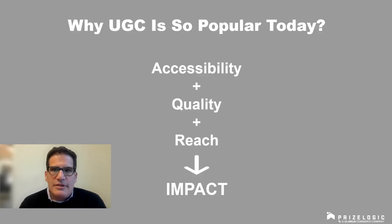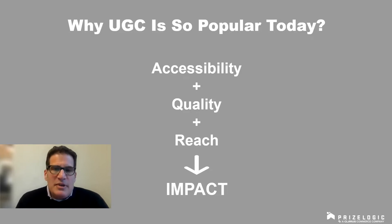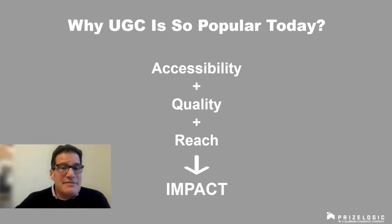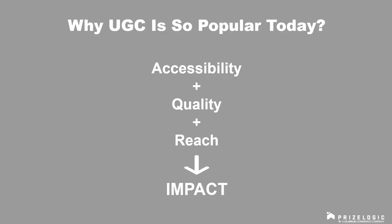So why is UGC so popular today? Breaking it into a few pieces: accessibility — I have it at my fingertips, the ability to create it and distribute it at any moment. Equally important is quality. Brands have their own image and standards to maintain. The ability to produce higher quality content is looked upon much more favorably by brands, but also consumers. It's accessible, it's higher quality, and you've got massive reach immediately at your fingertips. Those three things combined allow some pretty impactful things with user-generated content.